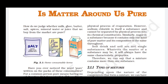Now, what is a pure substance? In chemistry, when we say that a particular substance is pure, it means that the substance is made up of only one type of particle. In other words, a substance is a pure single form of matter. Depending on chemical compositions, these matters are divided or classified into elements and compounds.